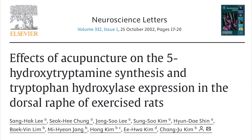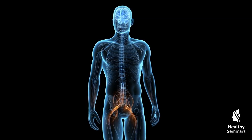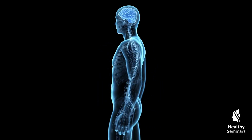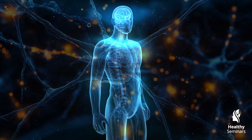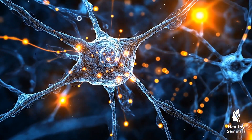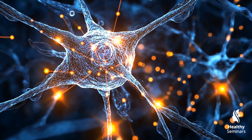On a molecular level, acupuncture enhances serotonin availability by increasing the activity of tryptophan hydroxylase, the rate-limiting enzyme responsible for serotonin production. Acupuncture has been shown to modulate serotonin transmission in key regions such as the hippocampus, amygdala, and brainstem. By restoring balance within these networks, acupuncture not only alleviates symptoms of depression and anxiety, but also improves sleep patterns and stress resilience.